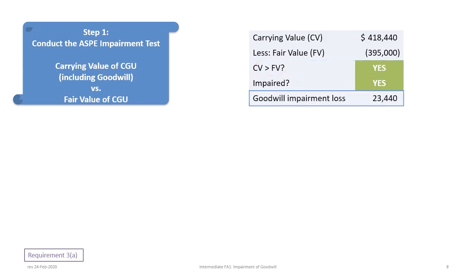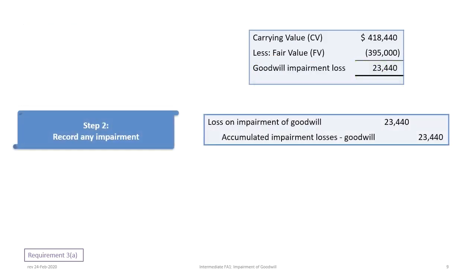Taking the carrying value less the fair value gives a goodwill impairment loss of $23,440. Step two is to record the impairment: we debit loss on impairment of goodwill for $23,440 and credit accumulated impairment losses for goodwill for $23,440.